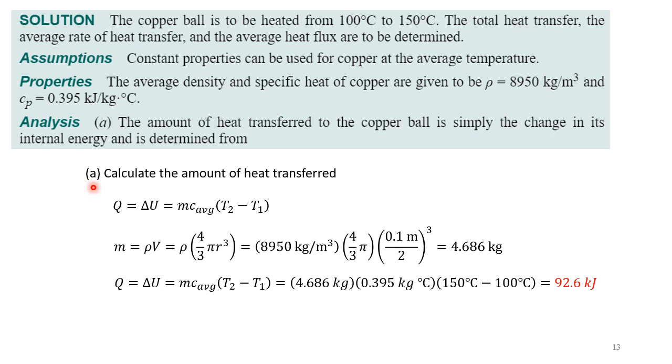So here we can calculate the amount of heat transferred. We can simply use the formula that we looked at before where Q was equal to delta U equals M C times the difference in temperature. Now we have to know what the mass is. They didn't give us the mass, but we know what the density is. So the mass is simply the density times the volume and it's a sphere. So that's four thirds pi r cubed. So we can plug in the values that are given and we can calculate the mass to be 4.686 kilograms.